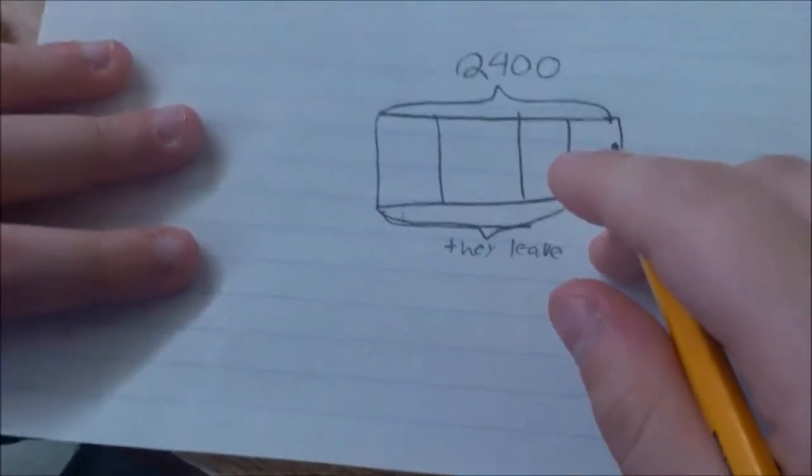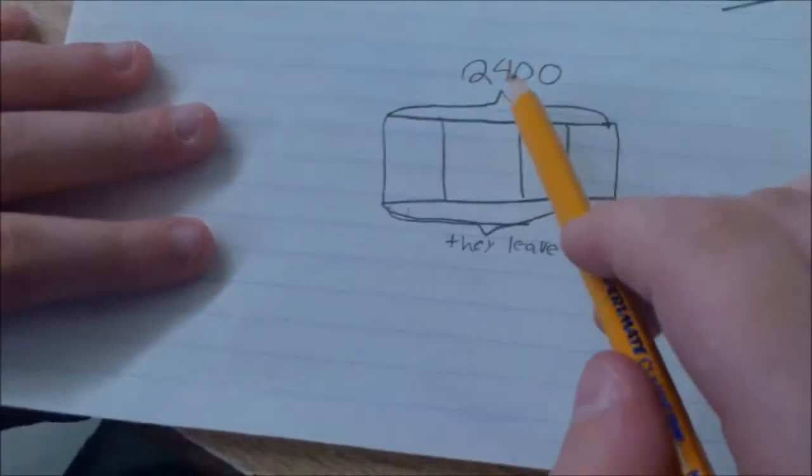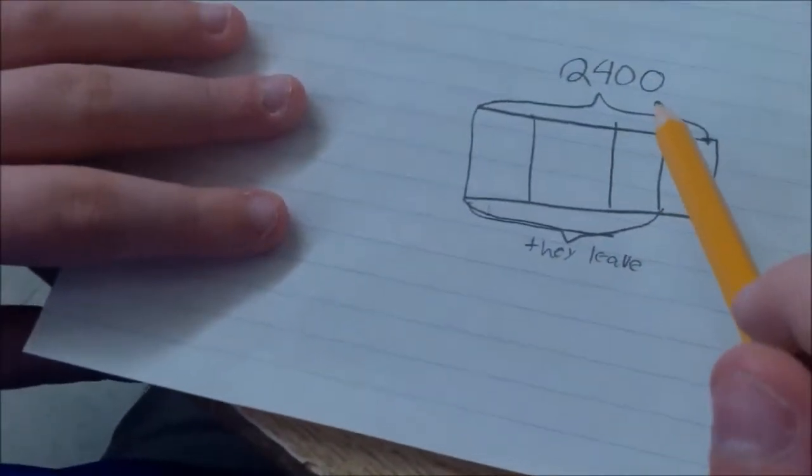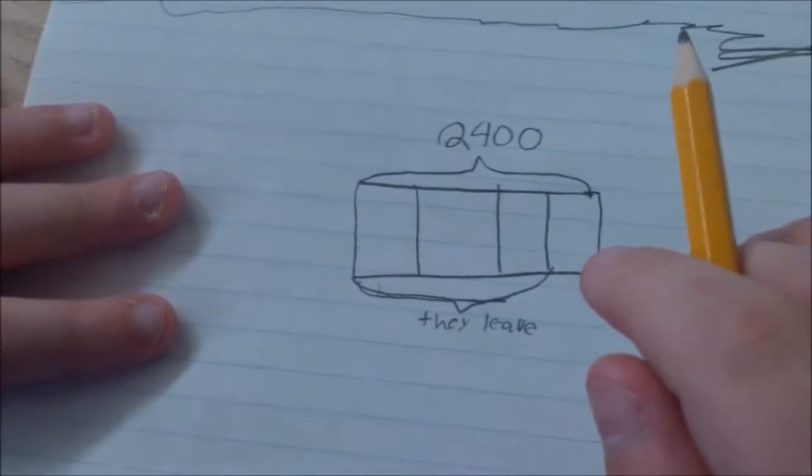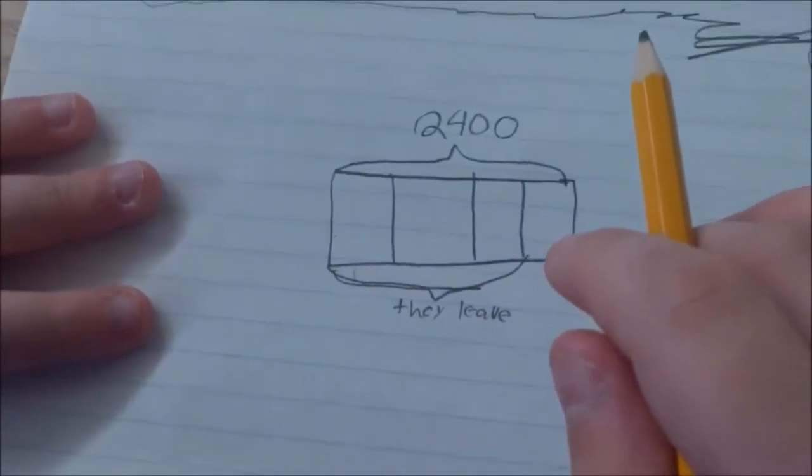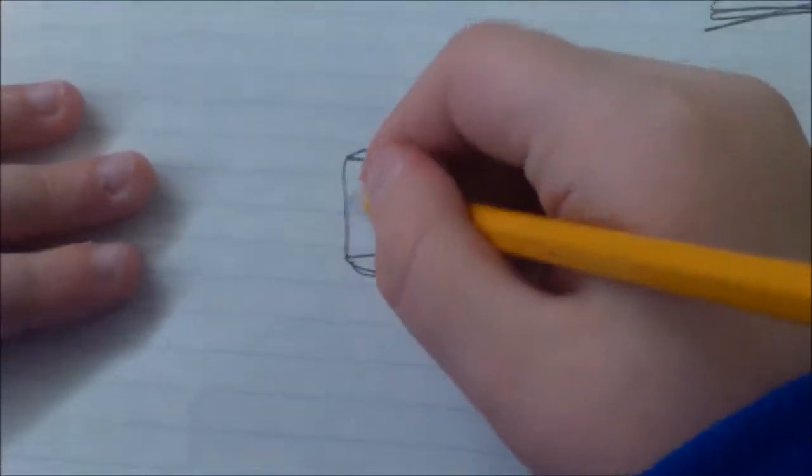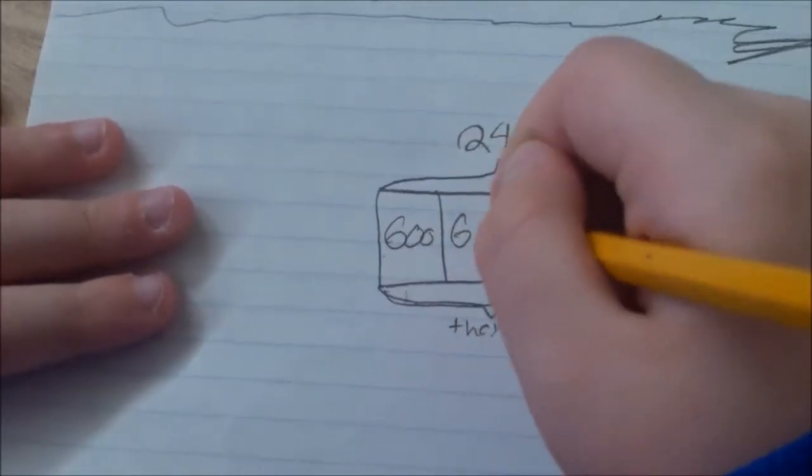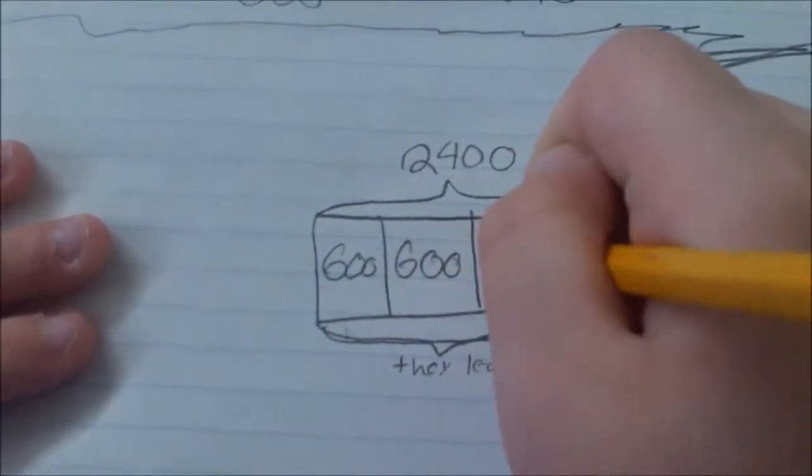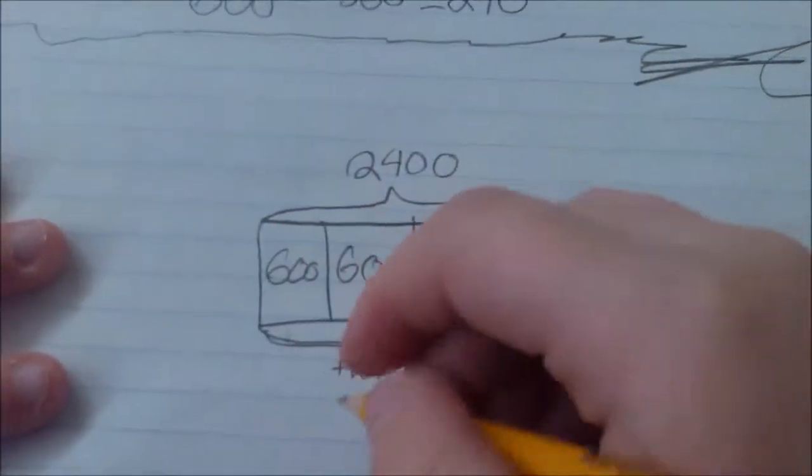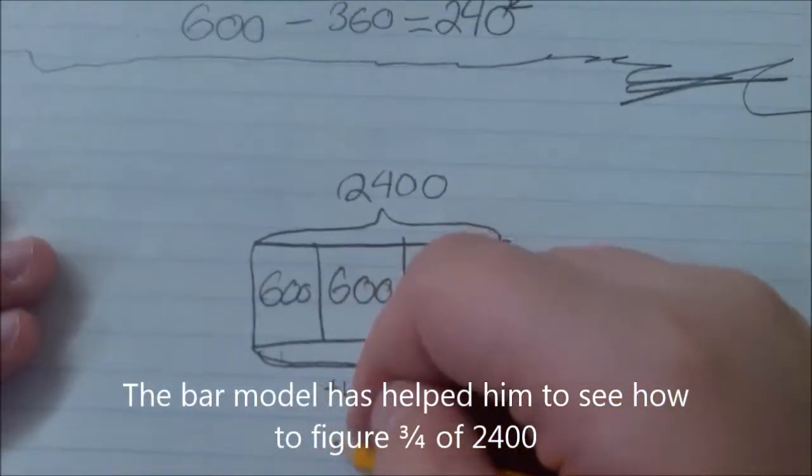So let's find out this bit first, how many leave? So we have to divide it by four, that would be six hundred. Yeah? Okay. So that means one thousand eight hundred leave. Okay.